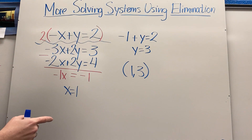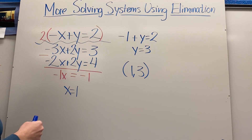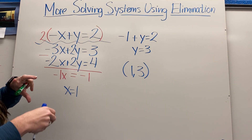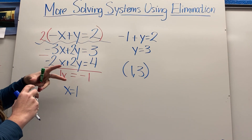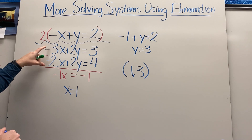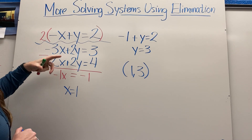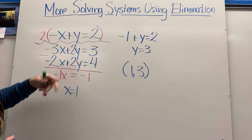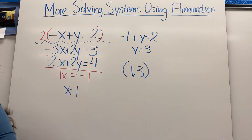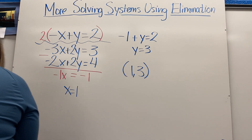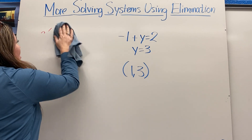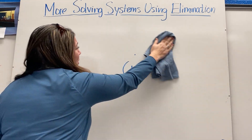Sometimes systems are set up nicely with the exact same or exact opposite coefficients. Other times we have to multiply one equation to match the other. And sometimes we have to multiply both equations — which is what we'll look at next.